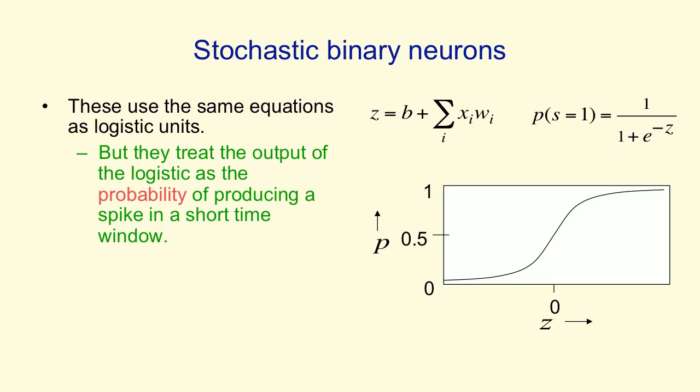So they're treating p as the probability of producing a 1, not as a real number. Of course, if the input is very big and positive, they will almost always produce a 1, and if the input's big and negative, they'll almost always produce a 0.